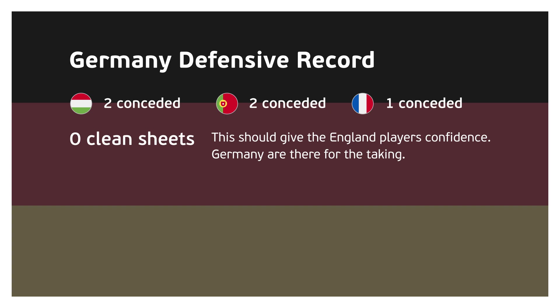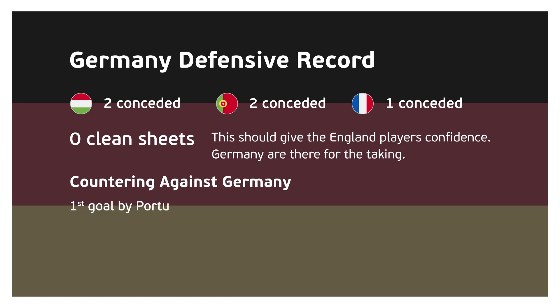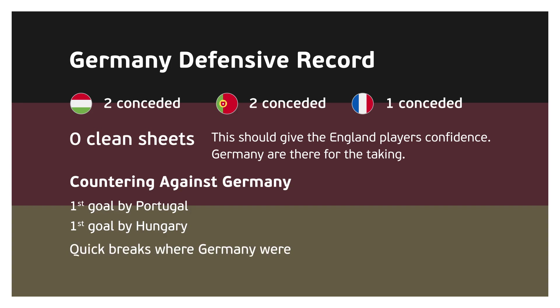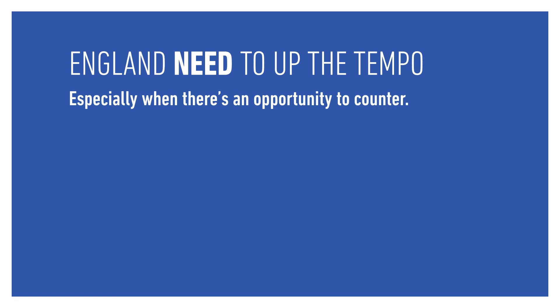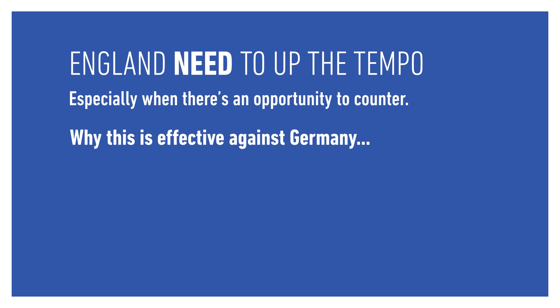We've seen quite a few times in this tournament that Germany are vulnerable when being countered. Examples are Portugal's first goal scored by Ronaldo and also Hungary's first goal — both were quick breaks where Germany weren't set up defensively and the opposition took advantage. England needs to up the tempo in this match, especially when there's an opportunity to counter, something we haven't really seen from them yet. This is effective because Germany's fullbacks are the main creators out wide and they push up high, leaving space behind.